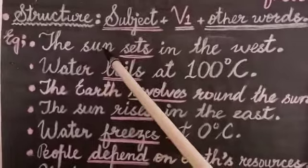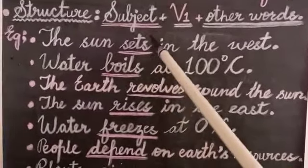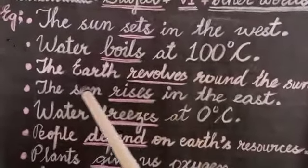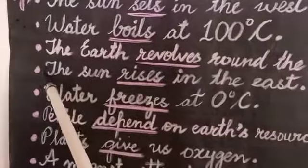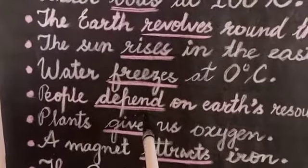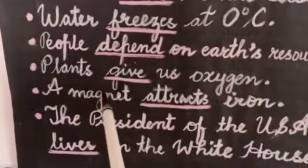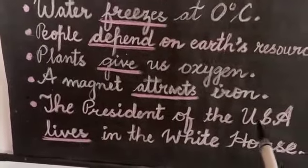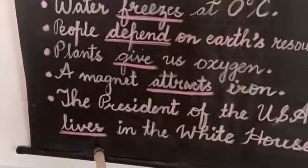Some examples in recap: The sun sets — 'the sun' is singular, so we use 'sets' (verb 'set' plus S). Water boils. The earth revolves — one planet, singular verb. The sun rises — one body, singular. Water freezes. People depend — plural subject, plural verb. Plants give — plural subject, plural verb. A magnet attracts — singular, so we add S to 'attract'. The president of the USA lives — one person, singular, so we add S to 'live'.